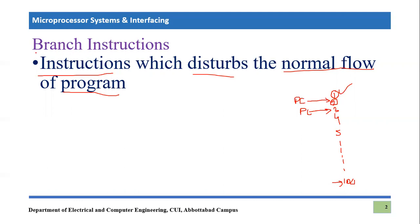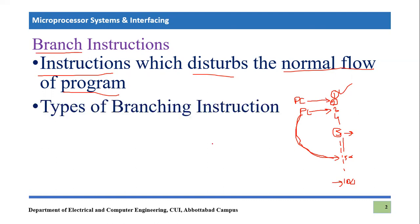Branch instructions disturb this normal flow. It might happen that after line number five, a branch instruction forces the program counter to jump to line number 55, skipping a number of instructions. This is why they are called branch instructions — they branch from the current instruction to a far instruction in the code, disturbing the normal sequential flow.